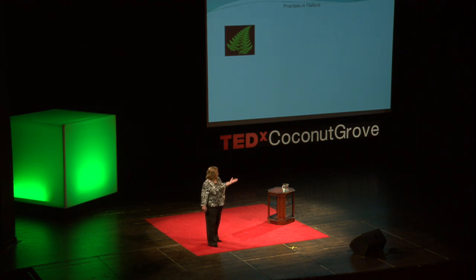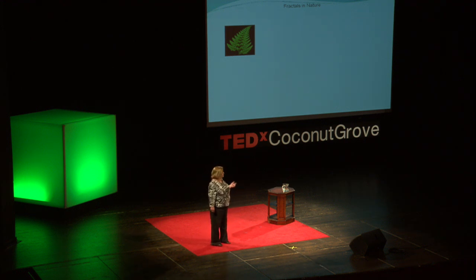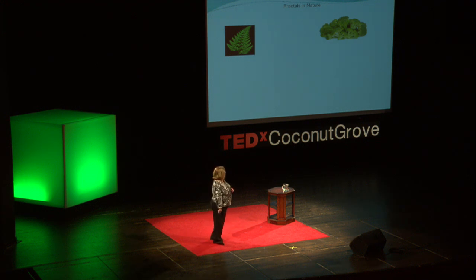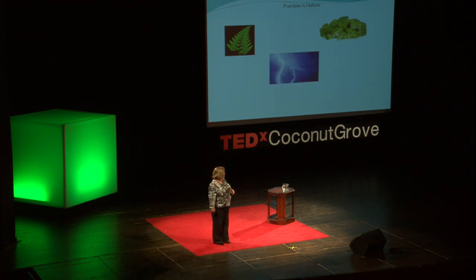This idea of self-similarity actually makes its way into nature. When we look at the fern leaf, you look at the big fern leaf and then the little piece of it, and you will see that it's very similar. And we all know and love broccoli — you look at a big head of broccoli, and the florets look very similar. Here we have lightning — that's another fractal. The mathematics is really all around us; we just need to know what we're looking at.